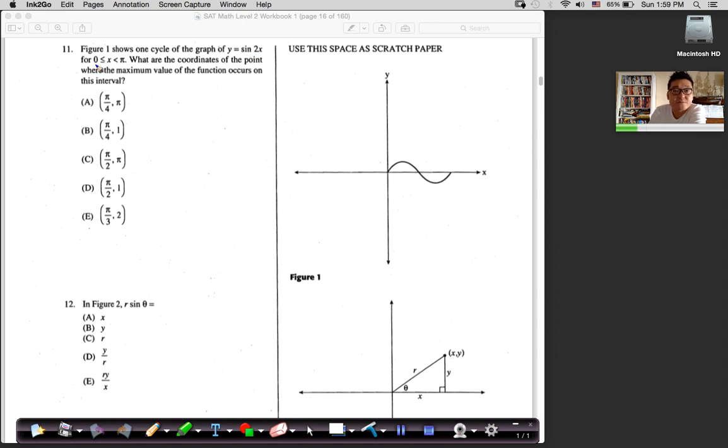Okay. I got the graph. And for X being in between 0 and pi. What are the coordinates of a point where the maximum value... I just read the important places here. Function occurs on this interval. Maximum. How do I find maximum? Well, maximum is the highest point, right? That point right there.